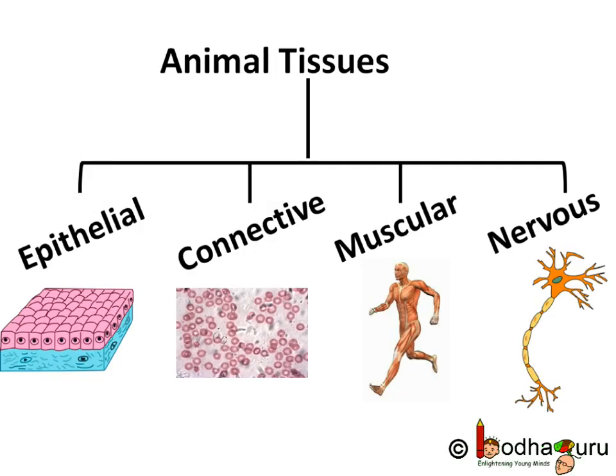To sum up what we have learned, there are mainly four types of tissues in animals. These are epithelial tissue, connective tissue, muscular tissue and nervous tissues. Each of these tissues is specialized in a certain kind of task. That was all for today. Bye-bye.